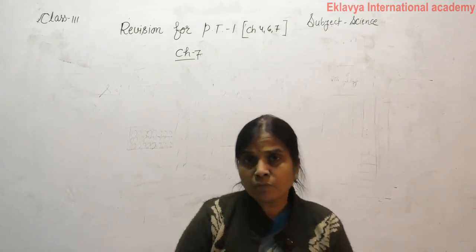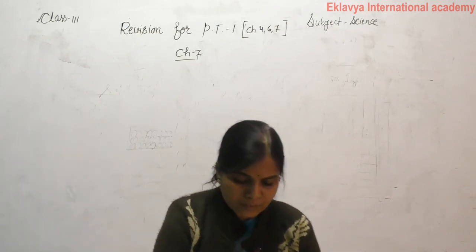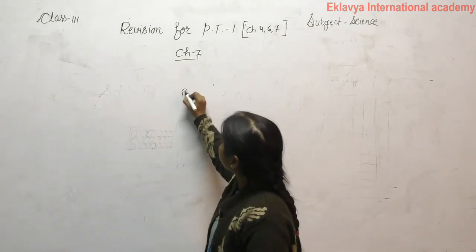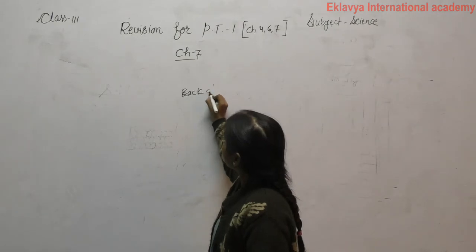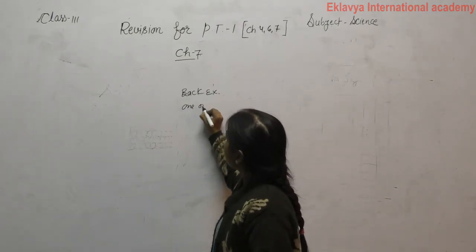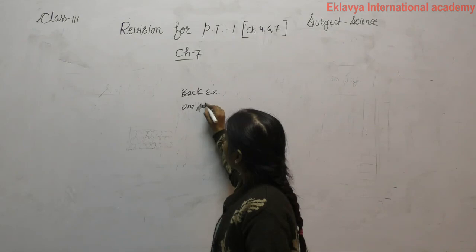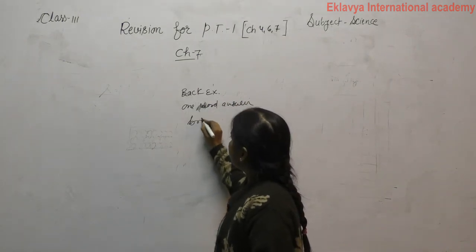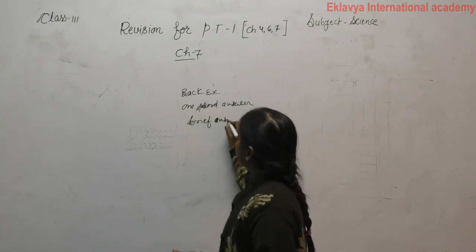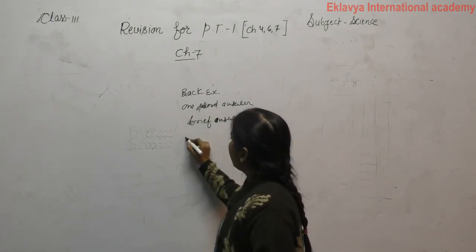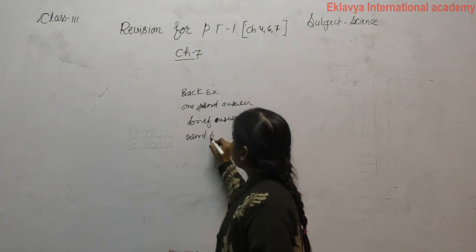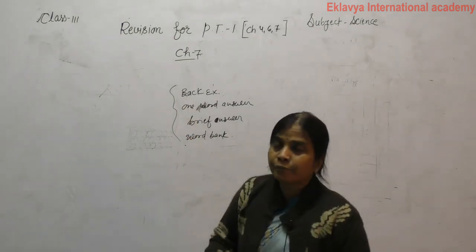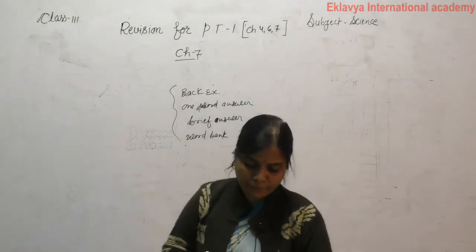We get woolen fiber from sheep — yes. We get silk from silkworms — yes. These are true statements. Complete all back exercises: one-word answer, brief answer, and word drink. Learn everything. Best of luck for PT-1. Thank you and have a nice day.